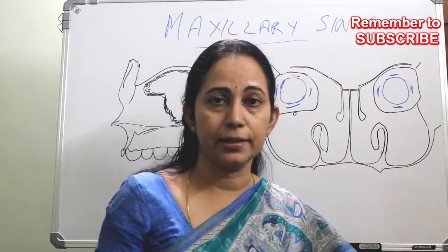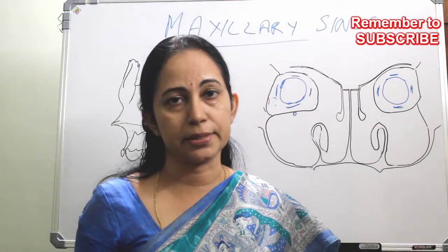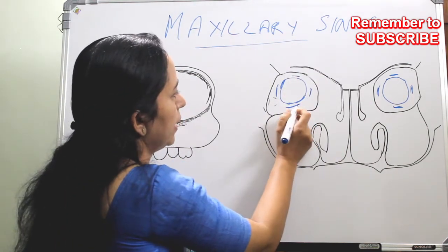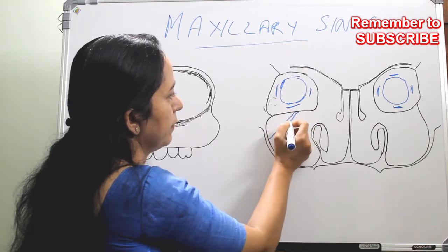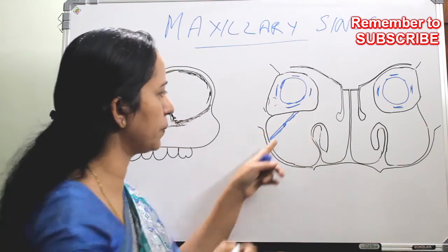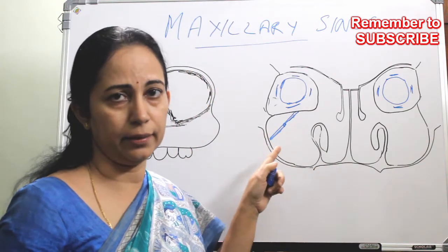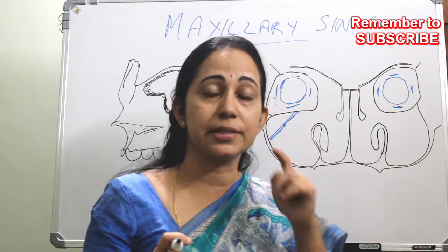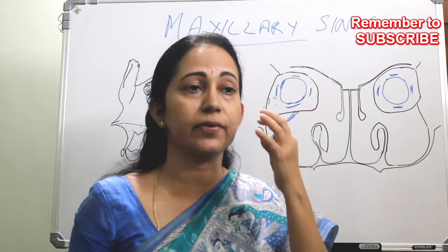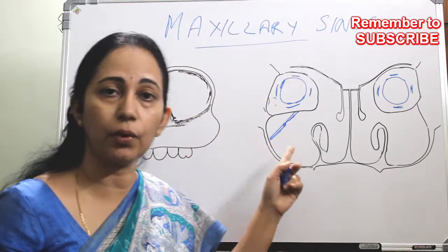There are variations — sometimes the infraorbital canal will be very close to the roof of the maxilla, and in some cases it will pass through a separate channel. If you take a CT scan, you will see the infraorbital canal passing through the maxillary sinus. That is why in cases of surgeries of the maxilla, fracture of the maxilla, or malignancy affecting the anterior wall and roof of the maxilla, you get paresthesia of the cheek, because of the involvement of the infraorbital nerve.